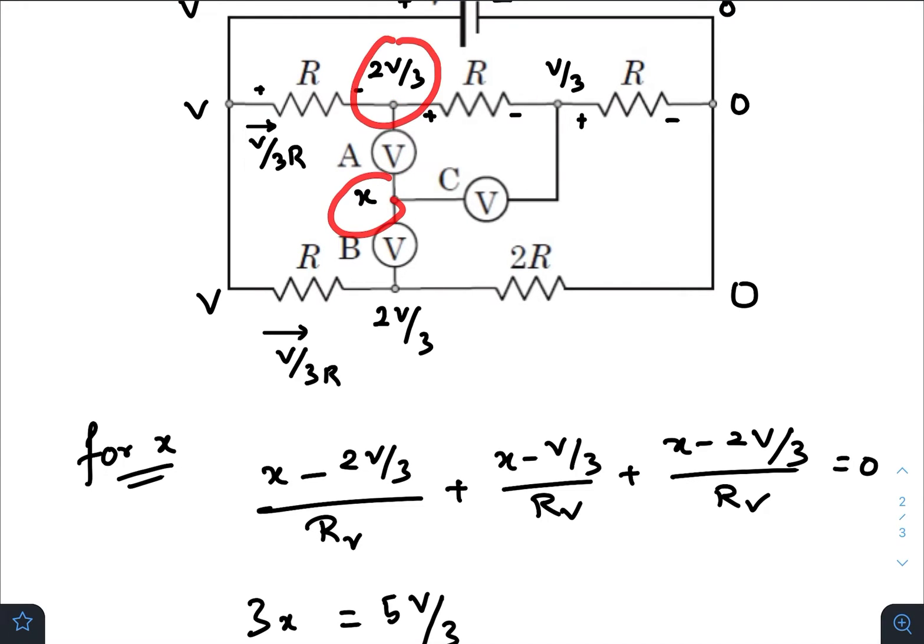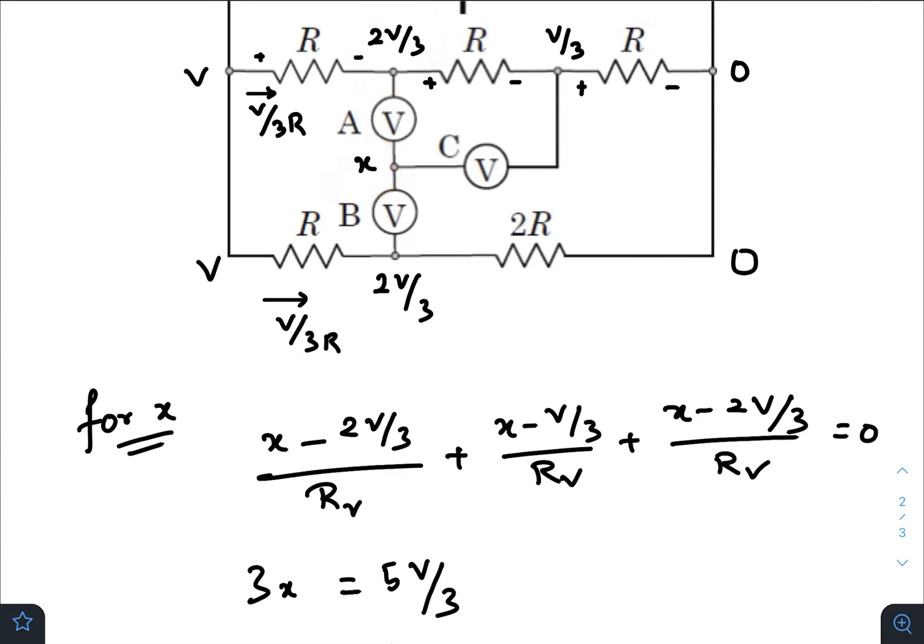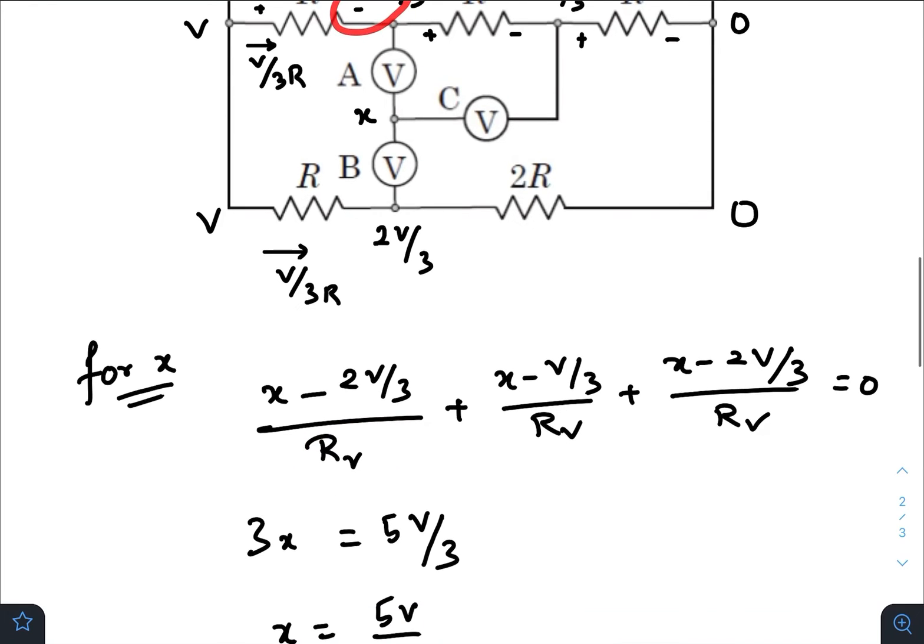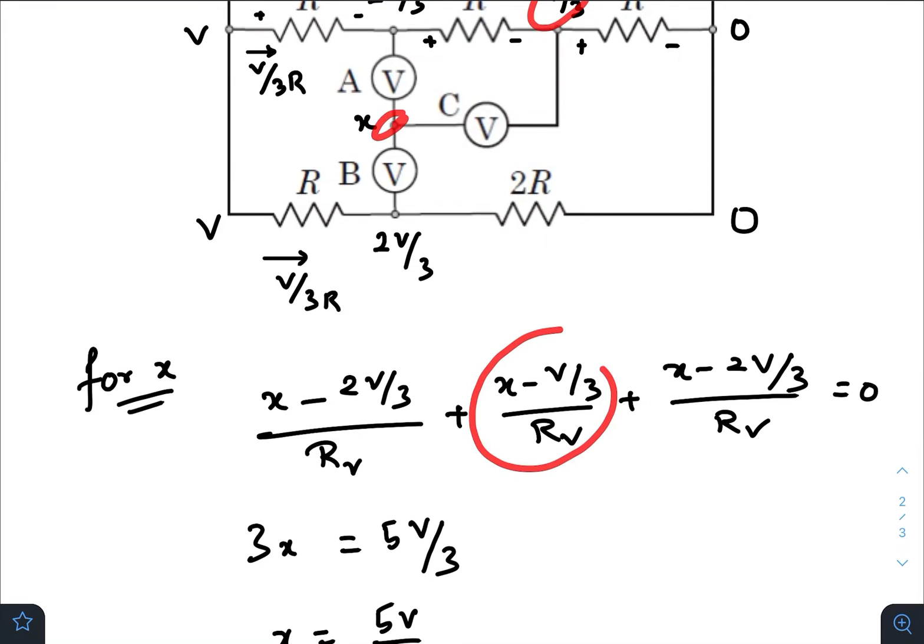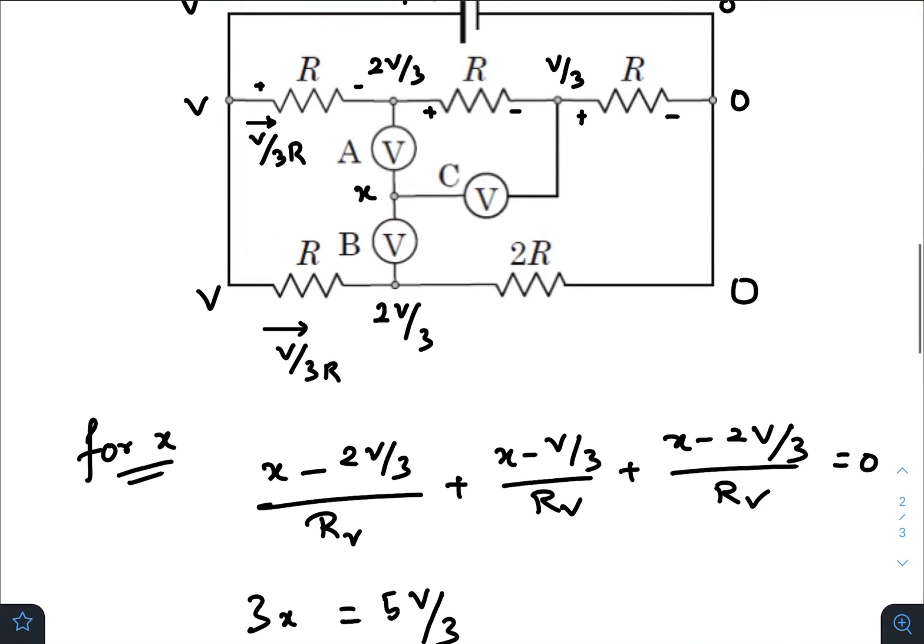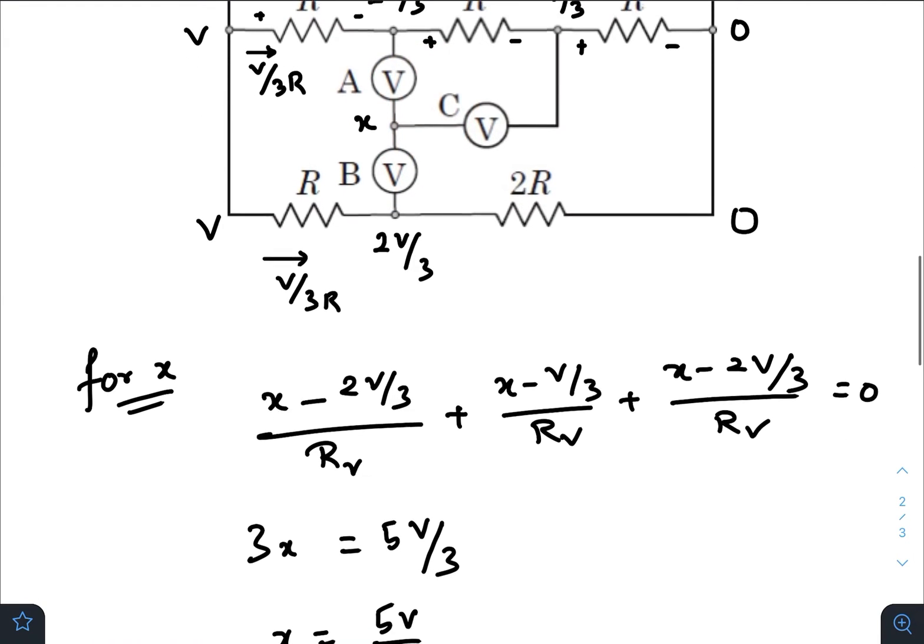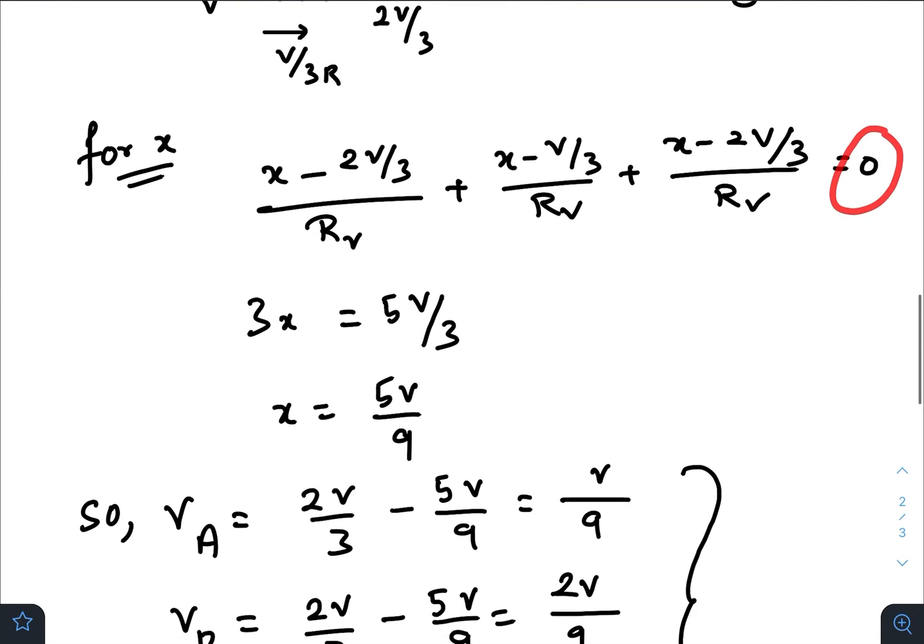x minus 2V/3 divided by—let R_V be the resistance of each voltmeter—so (x - 2V/3)/R_V plus (x - 2V/3)/R_V plus (x - 2V/3)/R_V. Because we have considered that all the currents are coming out from this node only, the sum of all these three currents should be zero. So after